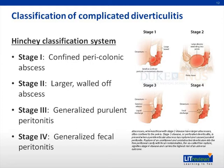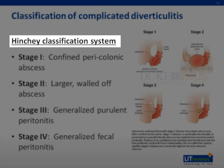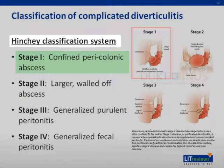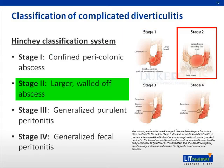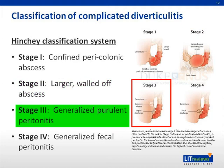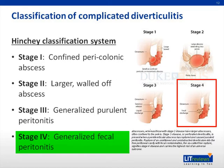Let's discuss the classification system for complicated diverticulitis. This system is known as the Hinchey classification system, and there are four stages of increasing severity. Stage one is defined as a confined pericolonic abscess. Stage two is defined as a larger walled-off abscess, typically located in the pelvis. Stage three is defined as generalized purulent peritonitis from a perforated diverticulum. Stage four is defined as generalized fecal peritonitis from widespread contamination of the peritoneal cavity arising from free perforation.